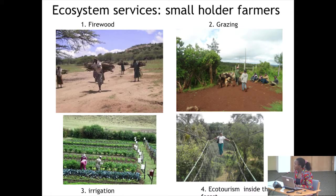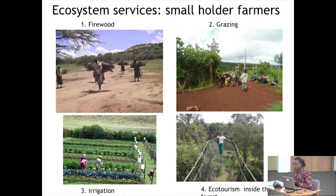For the small-scale farmers, there is firewood collection and grazing in the forest, because the farms are too small — about 1.2 hectares on average — not enough for grazing livestock, so they use the forest for grazing as well as intensive irrigation of their small fields. And since the beginning of PFM, there have been ecotourism activities with revenue collected by the communities for community development.